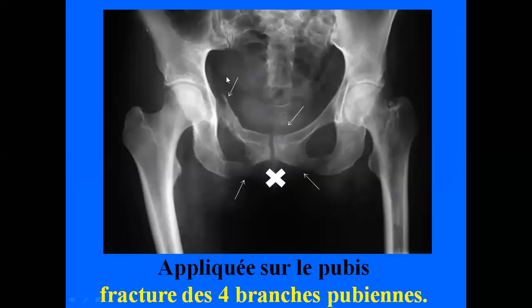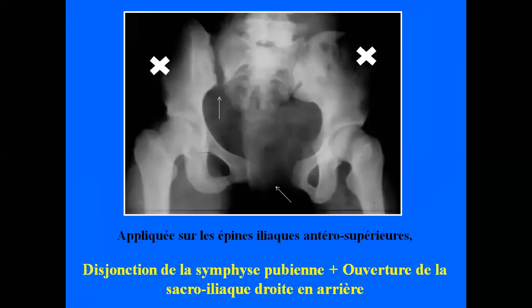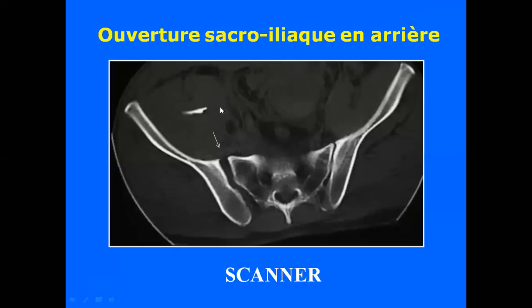Sur cette radiographie, le point d'application était sur le pubis ; les quatre flèches montrent des solutions de continuité des quatre branches pubiennes — fracture des deux cadres obturateurs. Sur cette autre radiographie, la force a été appliquée sur les épines iliaques antéro-supérieures : on voit une disjonction de la symphyse pubienne en avant et une ouverture de la sacro-iliaque droite. Le scanner est toujours utile, surtout pour l'analyse des lésions postérieures du bassin.